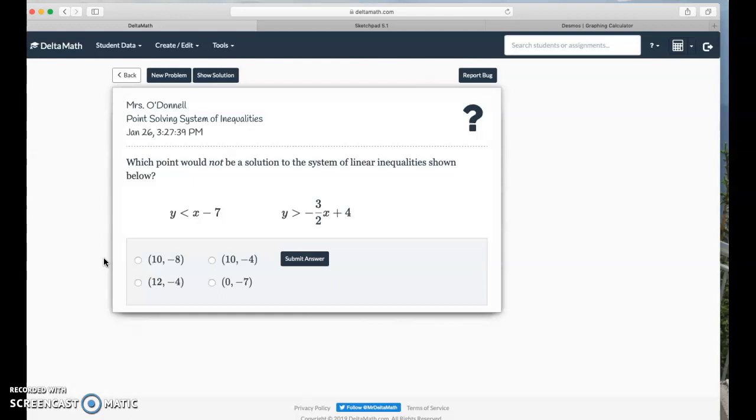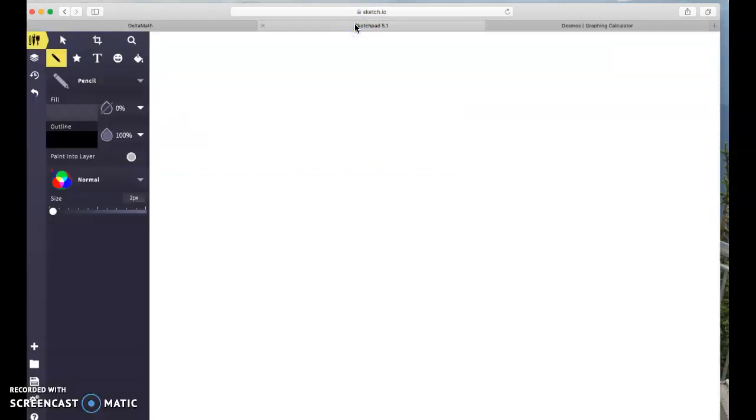So let's see here. I've got the points. I'm going to write this down and we're going to hop over to my sketchpad. y is less than x minus 7 and y is greater than negative 3 halves x plus 4. And then we're going to test the points: 10 negative 8, 12 negative 4, 10 negative 4, and 0 negative 7. All right, so let's hop over to the sketchpad and we'll take a look at it.